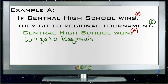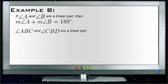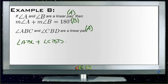We can deduce that based on the fact that A was true, and A leads to B is true, then B must be true. Our next example says: if A and B are a linear pair, then the measure of A plus the measure of B is 180 degrees. Then our statement is: angle ABC and angle CBD are a linear pair. So we have our A statement — if A and B are a linear pair — and our B statement — then measure A plus measure B is 180. Angle ABC and angle CBD are a linear pair, so that's a reflection of statement A. That tells us that angle ABC plus angle CBD must equal 180 degrees.